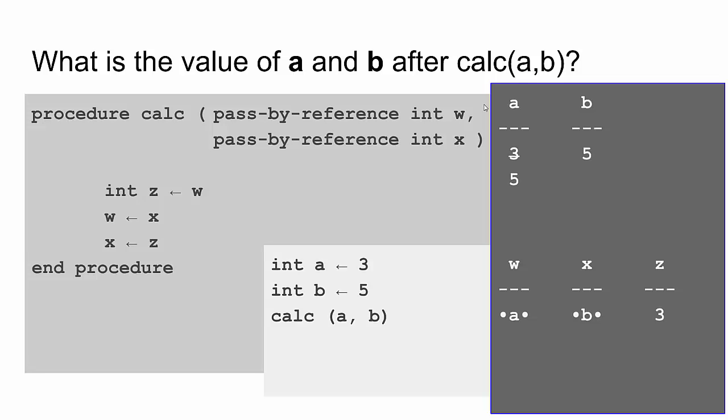The next line says assign x into w, take the value from x and put it in w. So x's value, well, x points to b, so x's value is 5. And we're going to put that in w. Well, w is a reference to a, so we're going to put that 5 in a, overriding the 3 that had been there. The next thing we're going to do is we're going to take that value z. Well, z's value is 3. And we're going to assign it into the variable x, but x is really b. So we're going to take that 3 and put it in b.